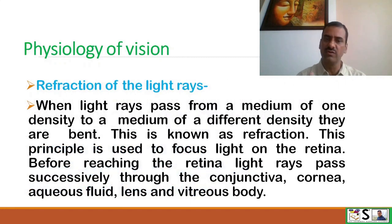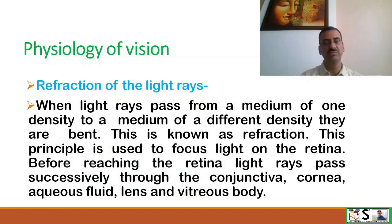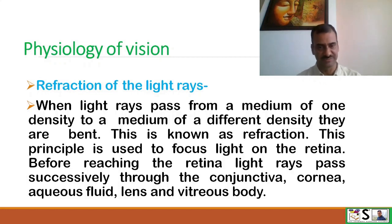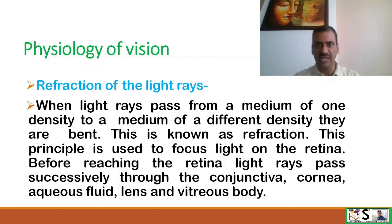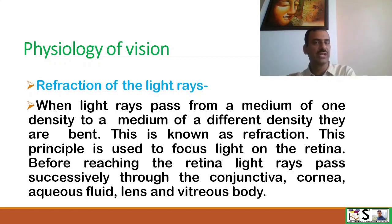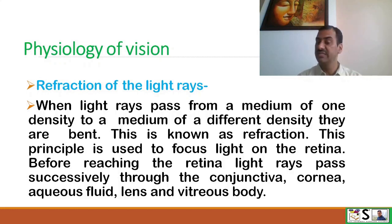First is refraction of light rays. When light passes from one medium to another, it bends, and this bending is known as refraction. When this principle is used in the eyes, it focuses light onto the retina. When the light rays coming from an object enter the eye, they are focused on the retina by refraction as they cross the conjunctiva, cornea, aqueous fluid, lens, and vitreous body.